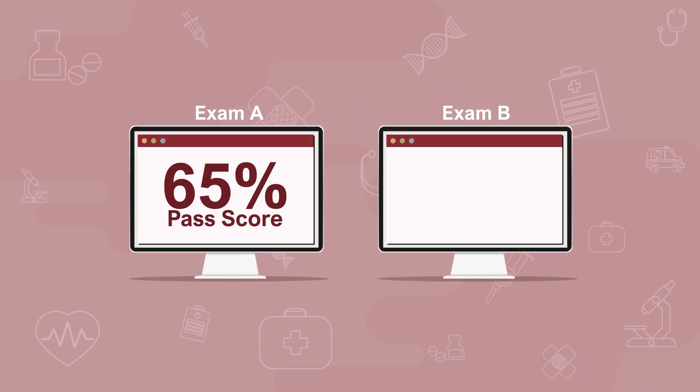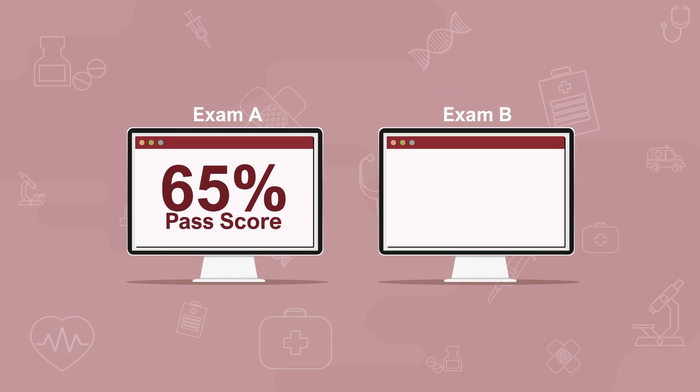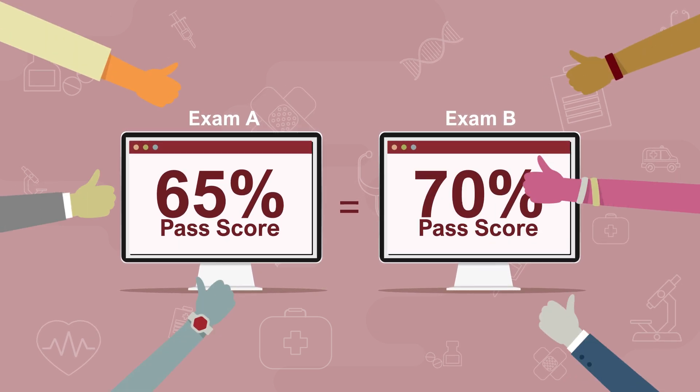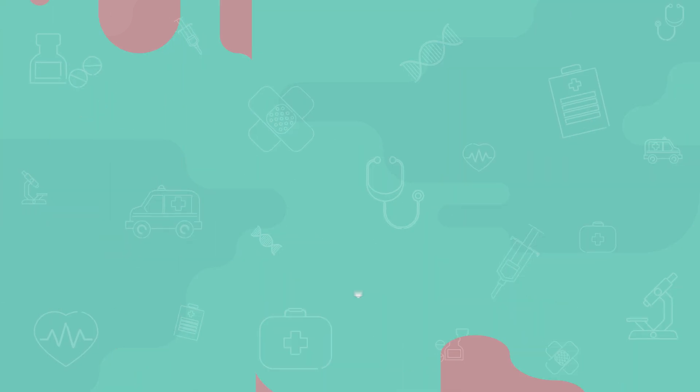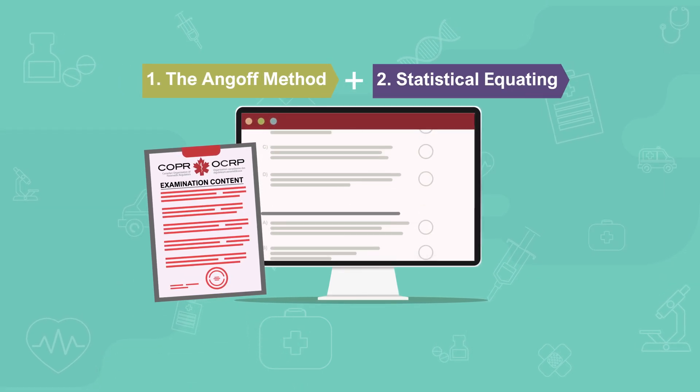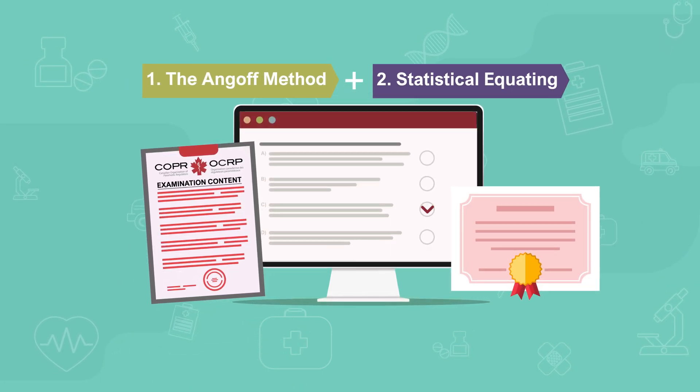This means that a pass mark of 65% on exam A would represent the same level of competence as a pass mark of 70% on exam B. This is how COPPER uses the Angoff method and statistical equating to set examination pass scores.